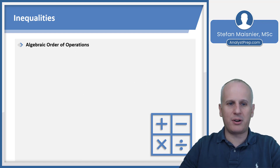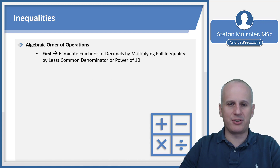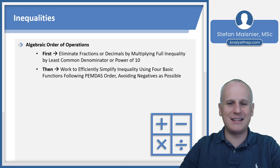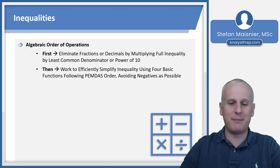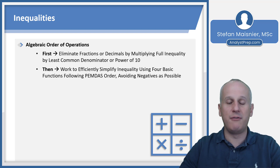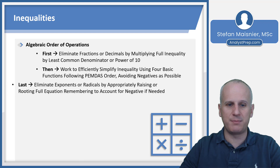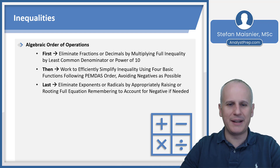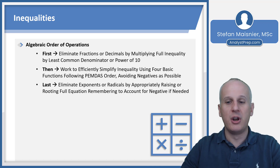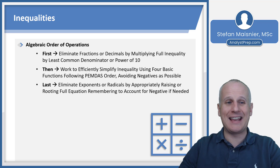Remember the algebraic order of operations. First, eliminate fractions or decimals by multiplying the full inequality by the least common denominator or power of 10. Then simplify using the four basic functions following the PEMDAS order — parentheses, exponents, multiplication, division, addition, subtraction — avoiding negatives as much as possible. Lastly, eliminate exponents or radicals by appropriately raising or rooting the full equation, remembering to account for a negative if necessary.